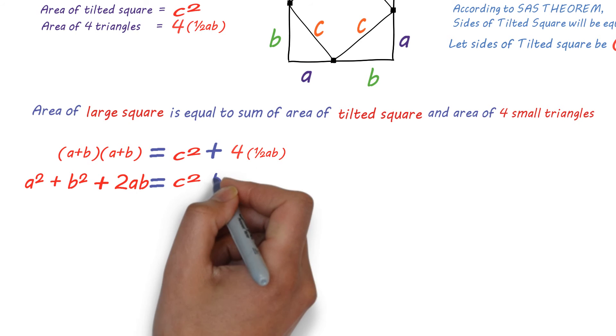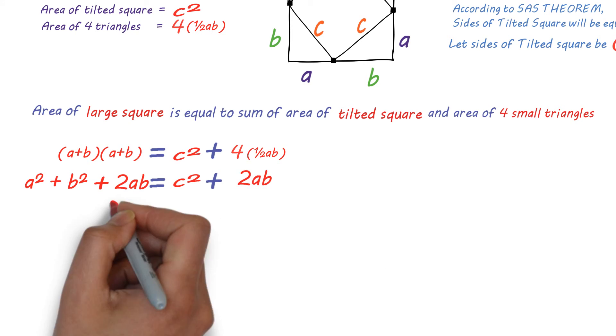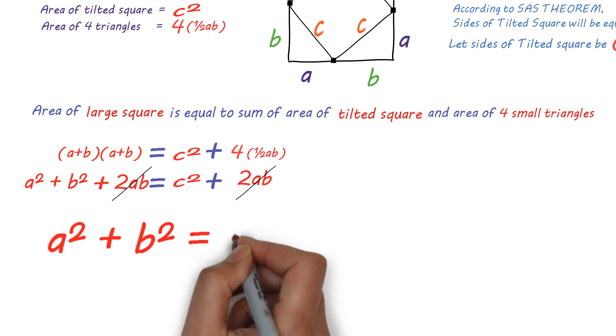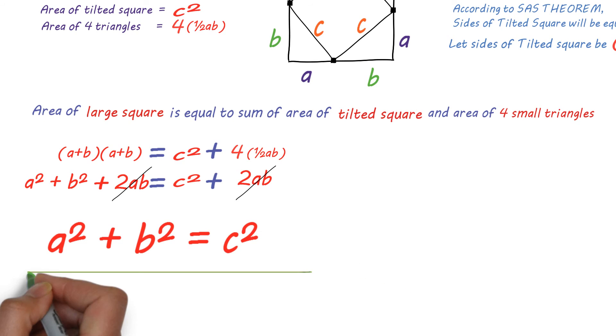Now, A squared plus B squared is equal to C squared because 2AB and 2AB will be cancelled out. Hence, this equation is proved.